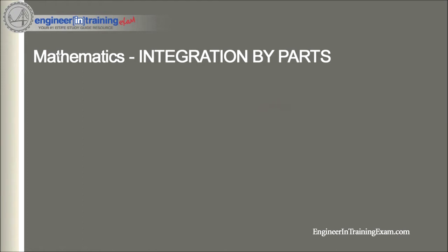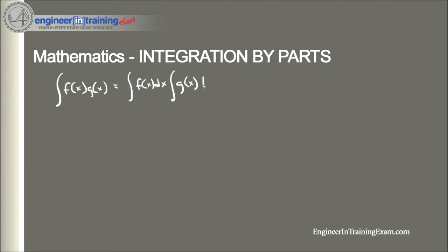A very common mistake people make when integrating a product of two functions — say f(x) times g(x) — is that they treat this as a product of two integrals. So what they do is take the integral of f(x) and multiply it by the integral of g(x). This is obviously not the right way to go about this.